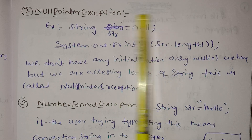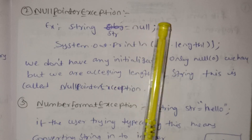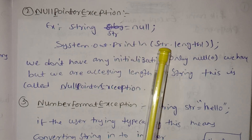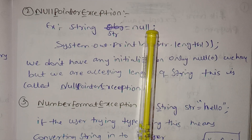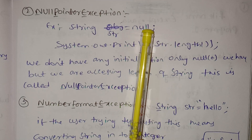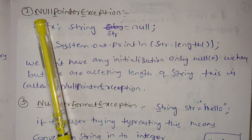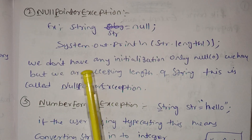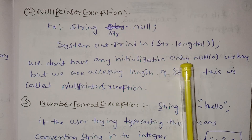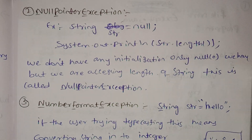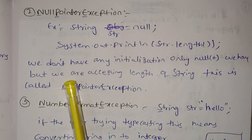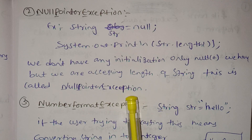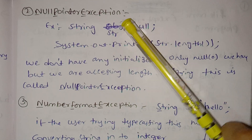The variable is equal to null. We have a NullPointerException when we call system.out.print and access string.length — this is the length of a null value. The NullPointerException is thrown because we don't have any initialization; null is not zero. We are accessing the length of a string that is null, which is called a NullPointerException.